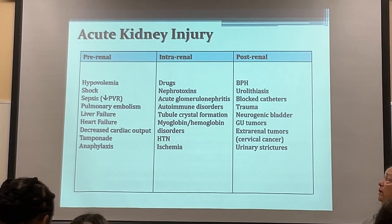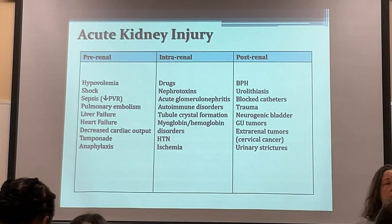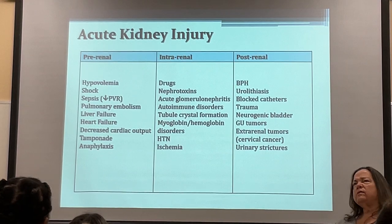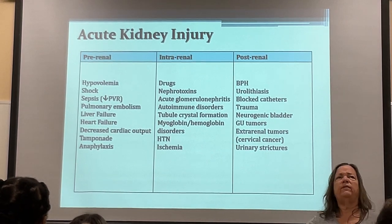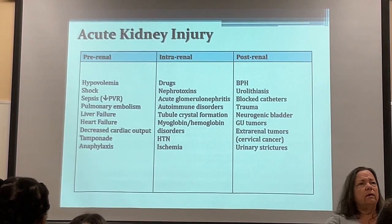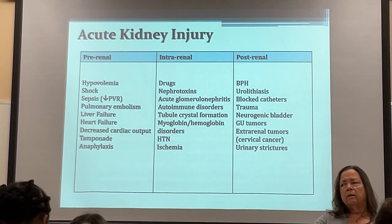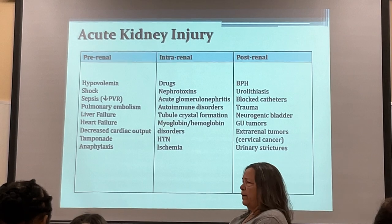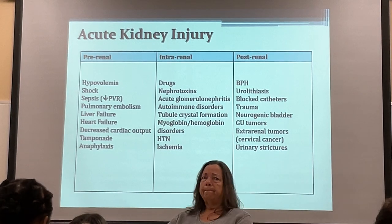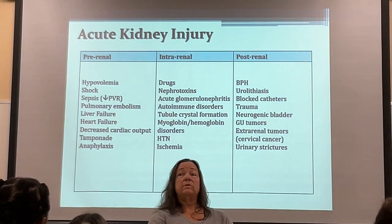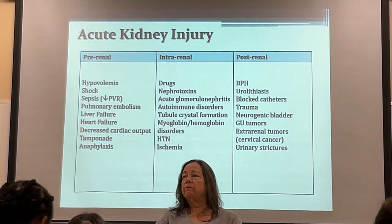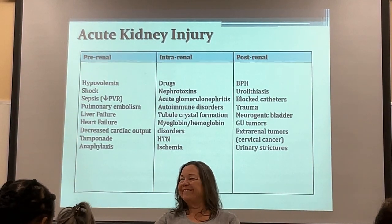Myoglobin and hemoglobin can also cause intra-renal damage. Think of diseases that block blood flow in the glomeruli — sickle cell is the classic example. Gold star for that answer.